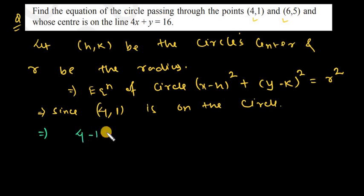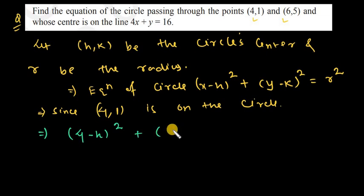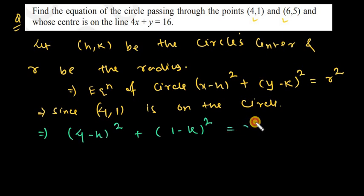Since the circle passes through point (4,1), substituting into the equation: 4 minus h whole square plus 1 minus k whole square is equal to r square. This is Equation 1.